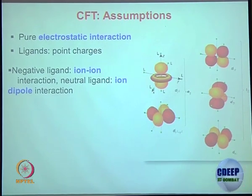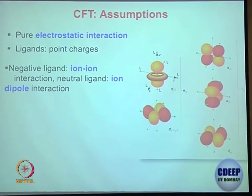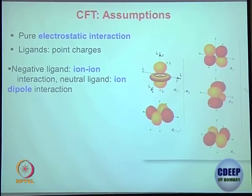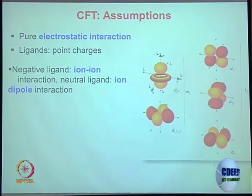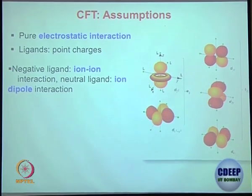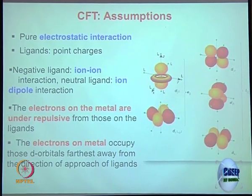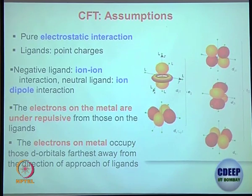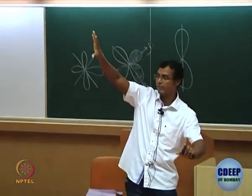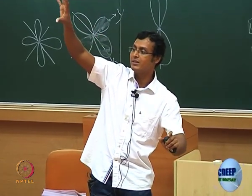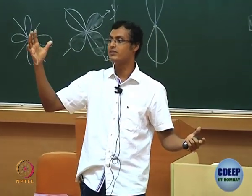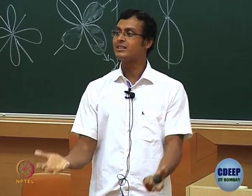Previously we were thinking just about covalent interaction. Now, the metal has electrons; if you are bringing a ligand, the ligand has electrons. So the ligand electrons and metal electrons are going to repel each other — they are the same charge. Although the metal is positive and the ligand is negative, when you bring them together those electrons repel, and the energy of the total system is going to be increased.